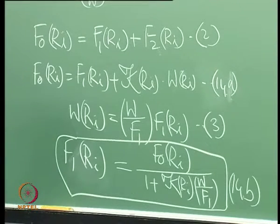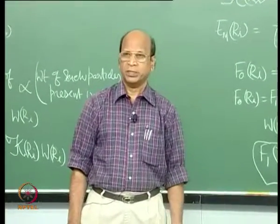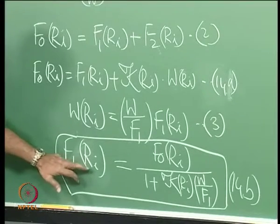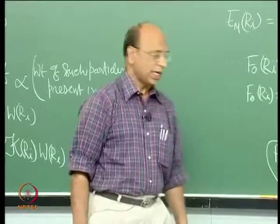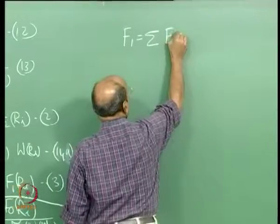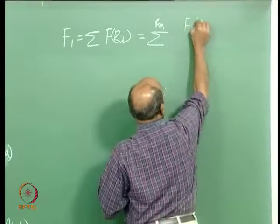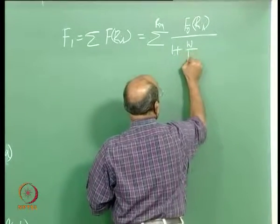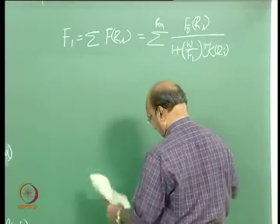F1(r_i) is for one particle size. To get total F1 I take the summation over all particle sizes. So F1 = Σ F1(r_i) = Σ [F⁰(r_i) / (1 + k(r_i) · W/F1)]. This is equation 15.